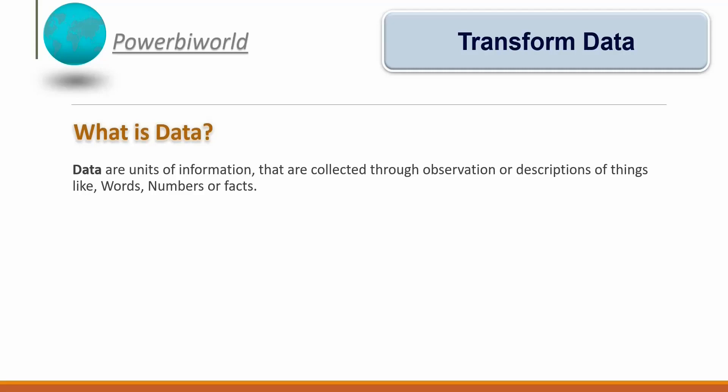Data are units of information that are collected through observation or description of things, like words, numbers, or facts. For example, your resume or portfolio that you share with various companies or update on job websites — they collect your data like your mobile number, email address, total work experience, and skills. All that detail is nothing but data. Another example is matrimonial sites, wherein they collect all information like your name, full name, address, age, mobile number, and description about yourself.